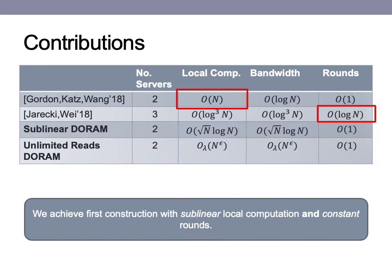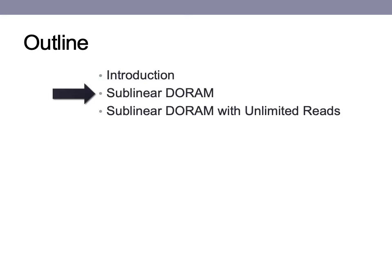We present two different constructions. First, an adaptation of square root ORAM to the secure computation DO-RAM setting, which obtains square root log n local computation. A second construction extends the first such that reads are no longer indistinguishable from writes, to obtain n to the epsilon for any epsilon greater than zero local computation. We do so by adapting techniques from doubly efficient private information retrieval. I will next discuss our sublinear DO-RAM construction, first by reviewing the traditional square root ORAM construction, then discuss how we adapt it to our secure computation setting.